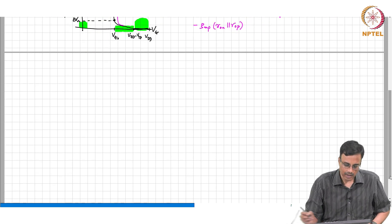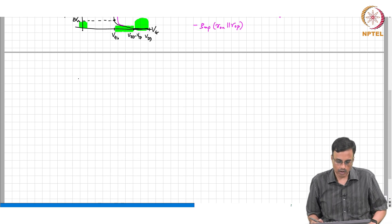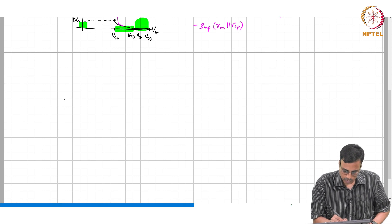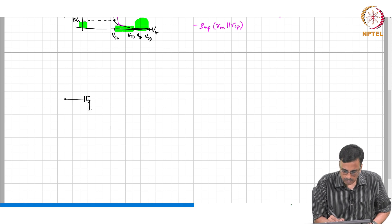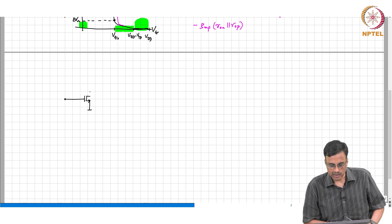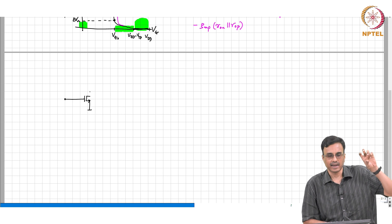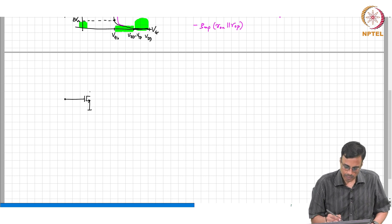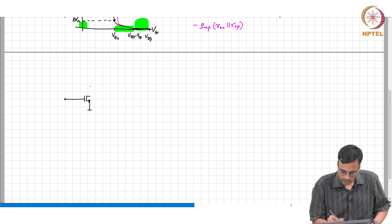The next thing I would like to discuss, taking off on the same theme, is another very practically useful circuit. We start again with the common source amplifier. If you look at the active load, one disadvantage is that we need an extra bias current mirror to bias the current source. It turns out there is a way of avoiding that.